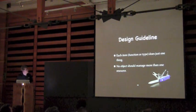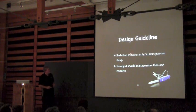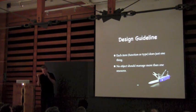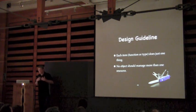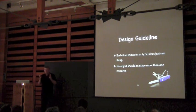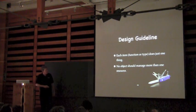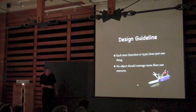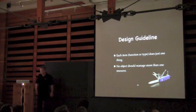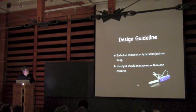I want to talk about a general design guideline: everything should do one thing. This is my problem — I make an object and it's great, then I add another thing and another thing, and pretty soon what I have is like a Swiss Army knife. That's not a good knife and it's certainly not good scissors. No — one thing, one thing. No object should manage more than one resource.